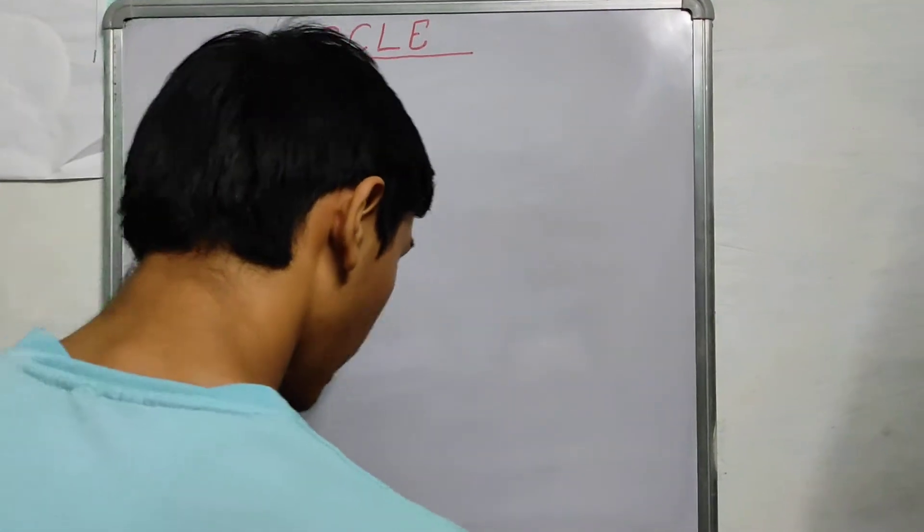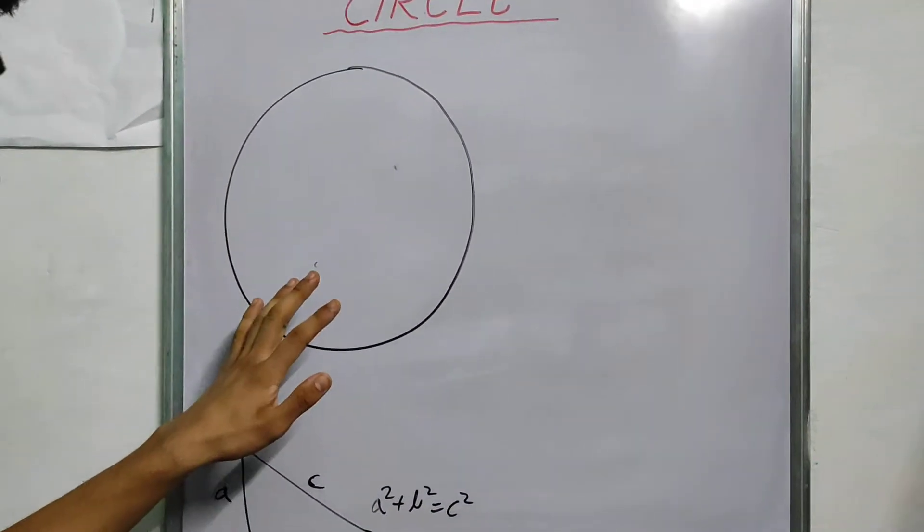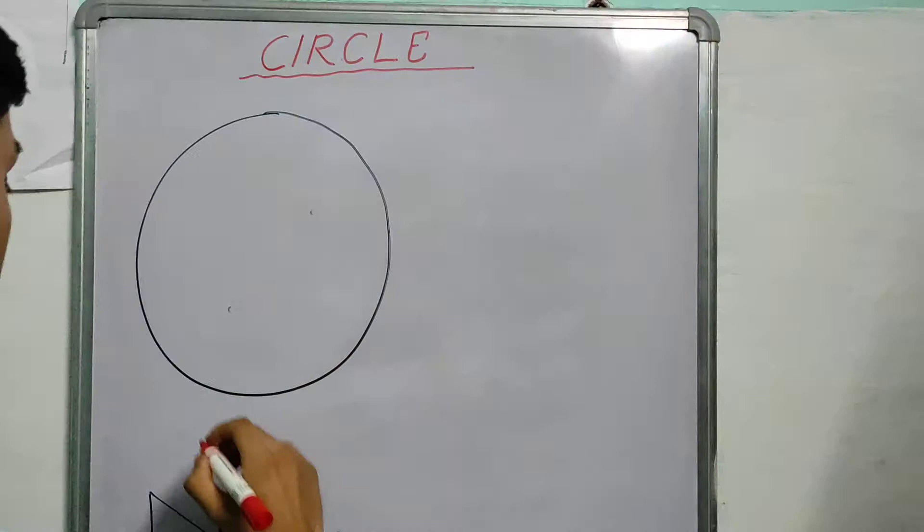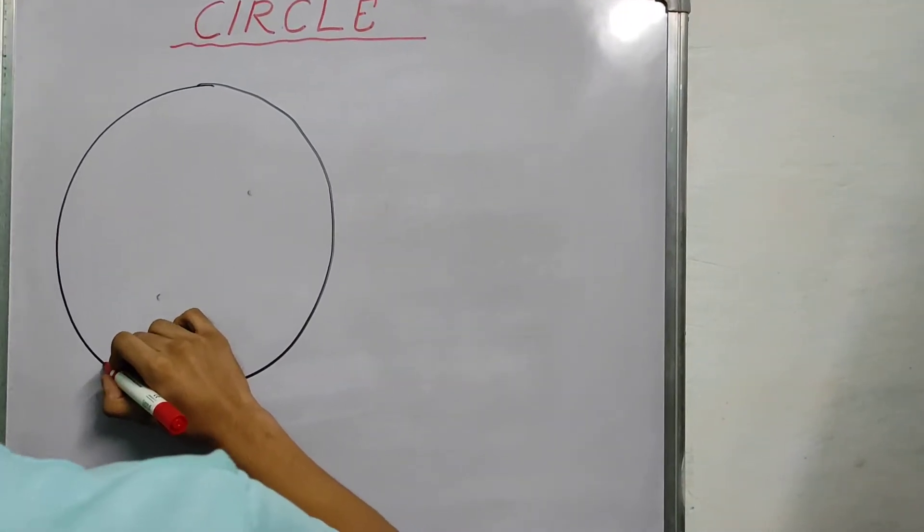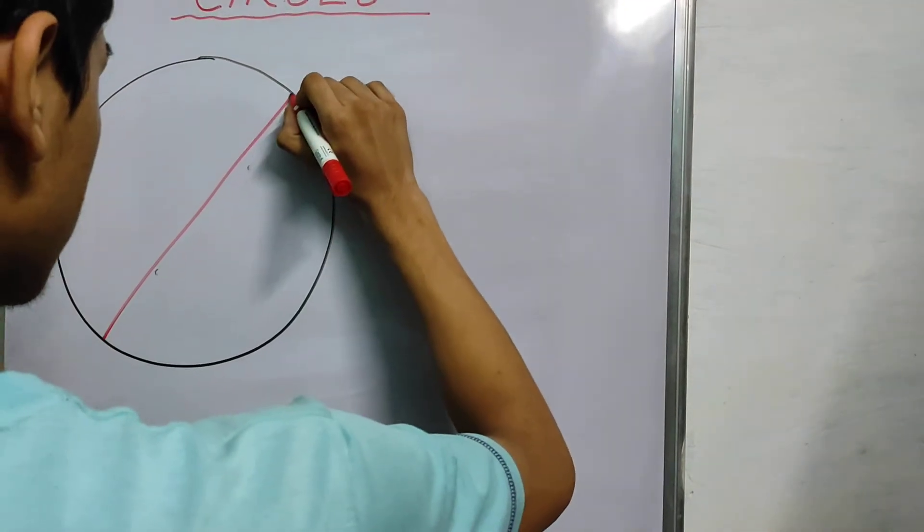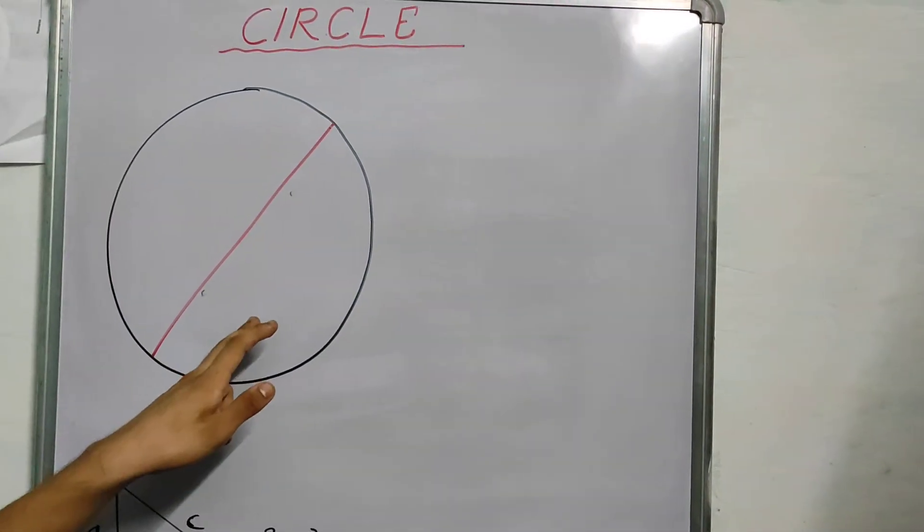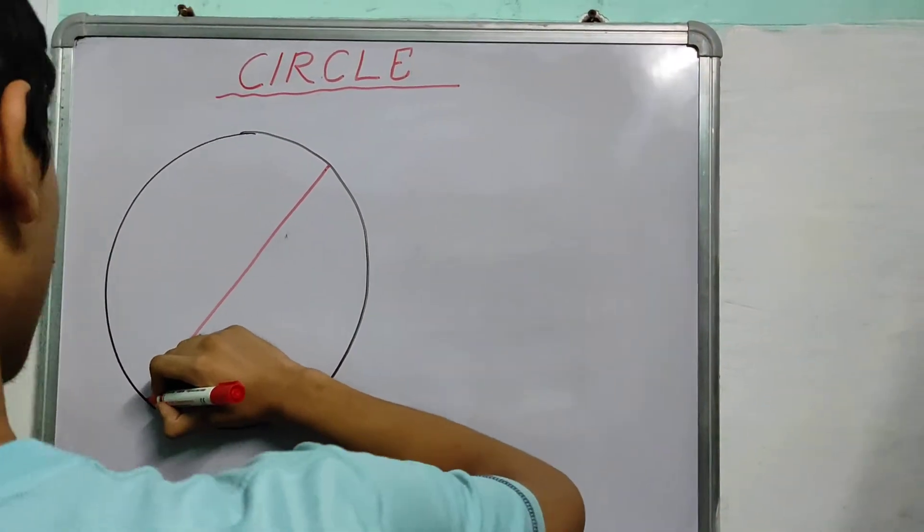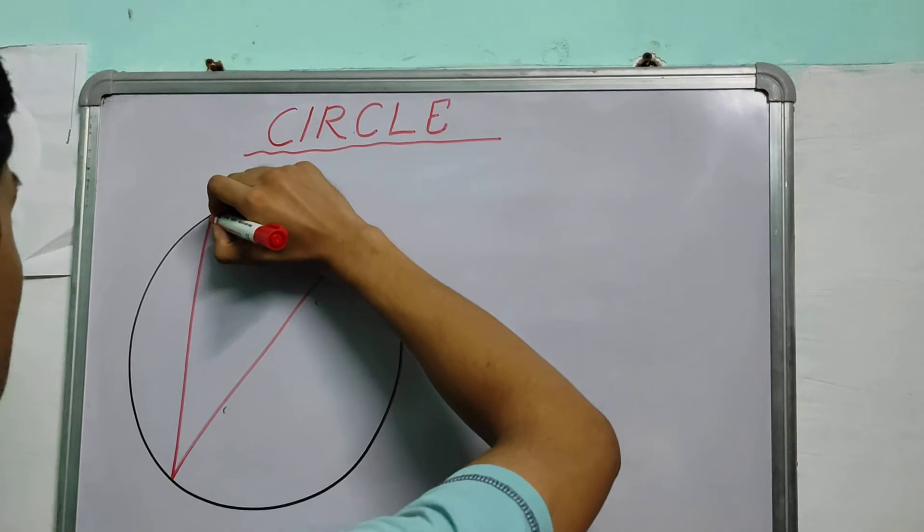Now, here the construction is very important. What I do is I draw a diameter, something like this, and join points like these.